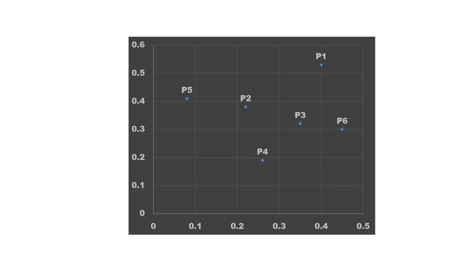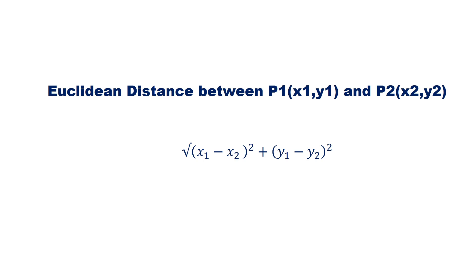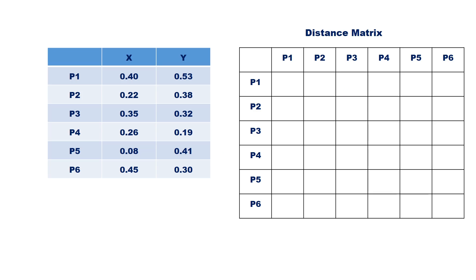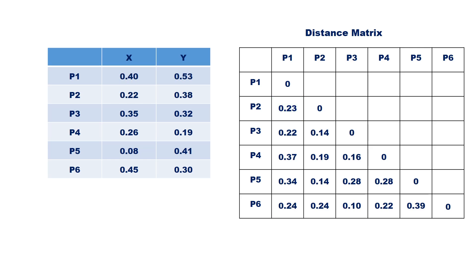This shows the graphical representation of the points on the xy plane. The formula to compute the Euclidean distance between two points P1 and P2 is given as the square root of (x1 minus x2) squared plus (y1 minus y2) squared. First, let us create the distance matrix. The Euclidean distance between P1 and P2 is the square root of (0.40 minus 0.22) squared plus (0.58 minus 0.38) squared, which equals 0.23. Similarly, compute the Euclidean distance between all pairs of points.